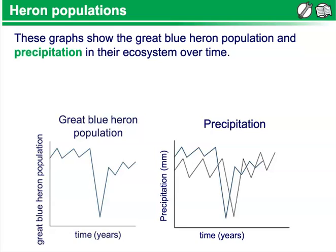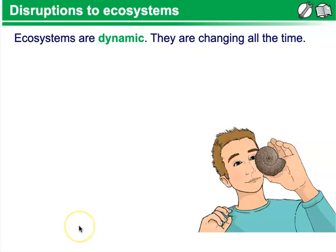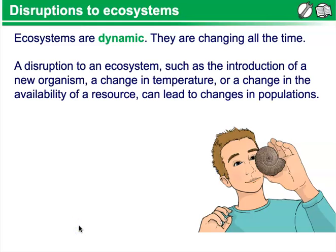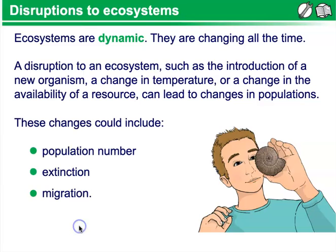The yearly fluctuations in population could be due to competition or yearly changes in prey populations. Disruptions to ecosystems. Ecosystems are extremely dynamic — they are changing all the time. A disruption to an ecosystem, such as the introduction of a new organism, a change in temperature, or a change in availability of a resource can lead to changes in population, including population numbers, extinction, or migration.